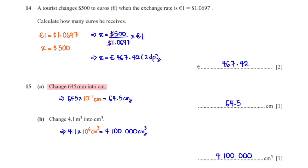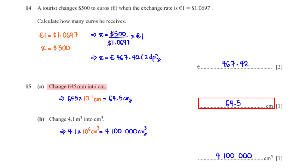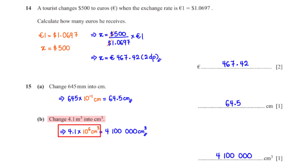Change 645 millimeters to centimeters. To convert 645 millimeters to centimeters, we multiply 645 by 10 raised to the power negative 1. This gives us 64.5 centimeters. Change 4.1 meters cubed into centimeters cubed. To convert 4.1 meters cubed to centimeters cubed, we multiply 4.1 by 10 raised to the power 6. This gives us 4,100,000 centimeters cubed.